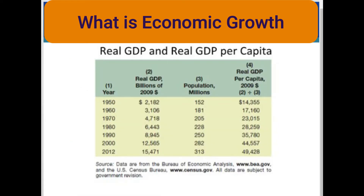This table presents the growth in real GDP and real GDP per capita in the United States since 1950. Due to the population increase, real GDP per capita has increased at a slower pace than real GDP. Since the population has doubled, the rate of increase in real GDP per capita has been about half that of real GDP.